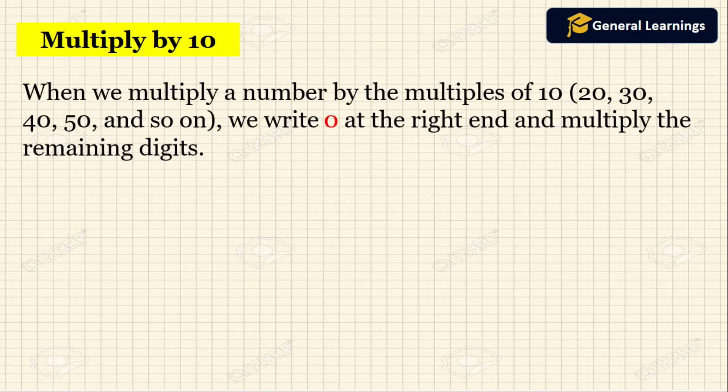Next we are going to see when we multiply a number by the multiples of 10, that is 20, 30, 40, 50 and so on. We write zero at the right end and multiply the remaining digit.